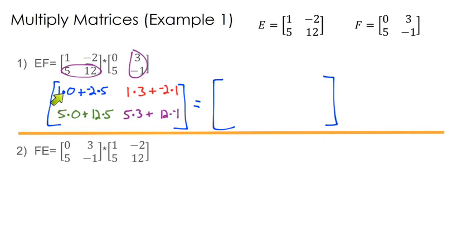1 times 0 is 0. Negative 2 times 5 is negative 10. 0 plus negative 10 is negative 10. Then up here we have 3 plus negative 2. Well, that's just a 1.